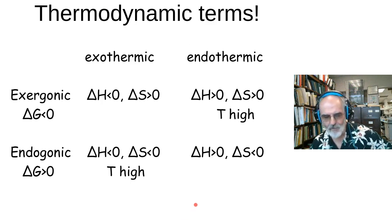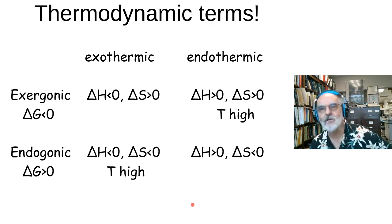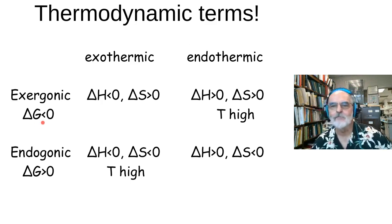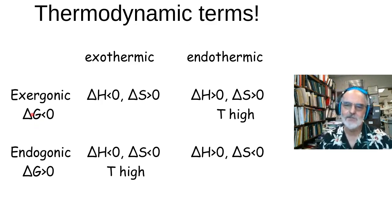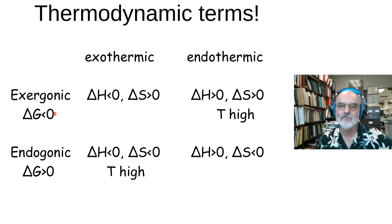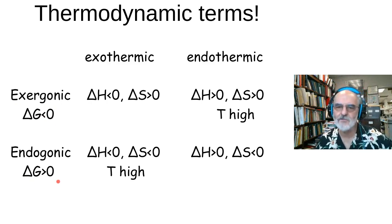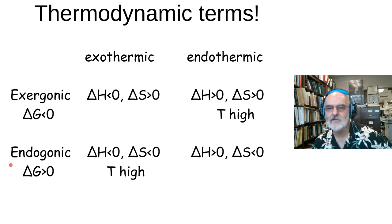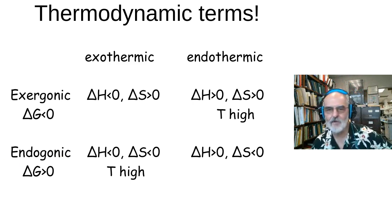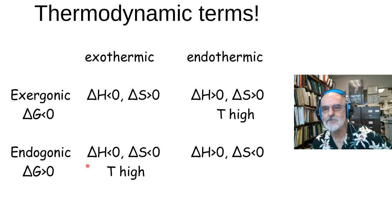There are a couple of terms we can use. If delta G is negative, the reaction is favorable — another way of saying this is it's exergonic. Delta G positive means endergonic. This is terminology you see in many biochemistry textbooks.